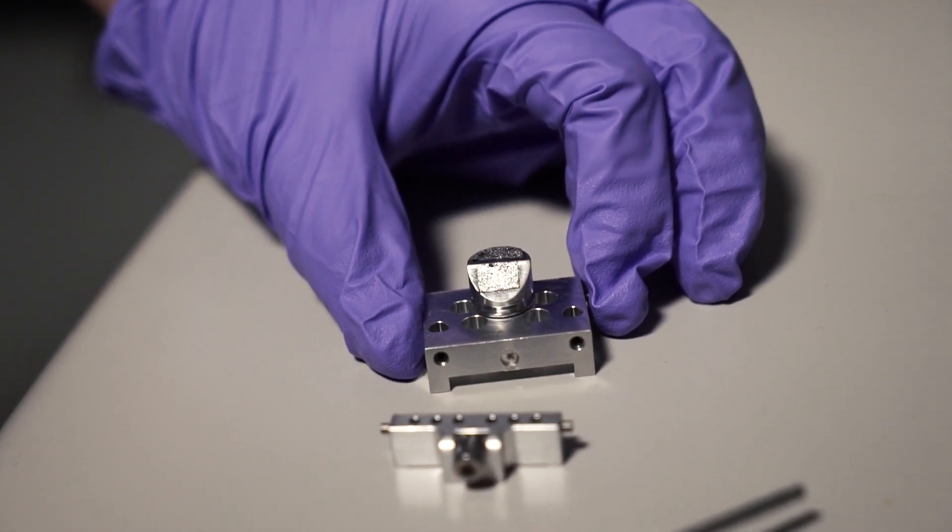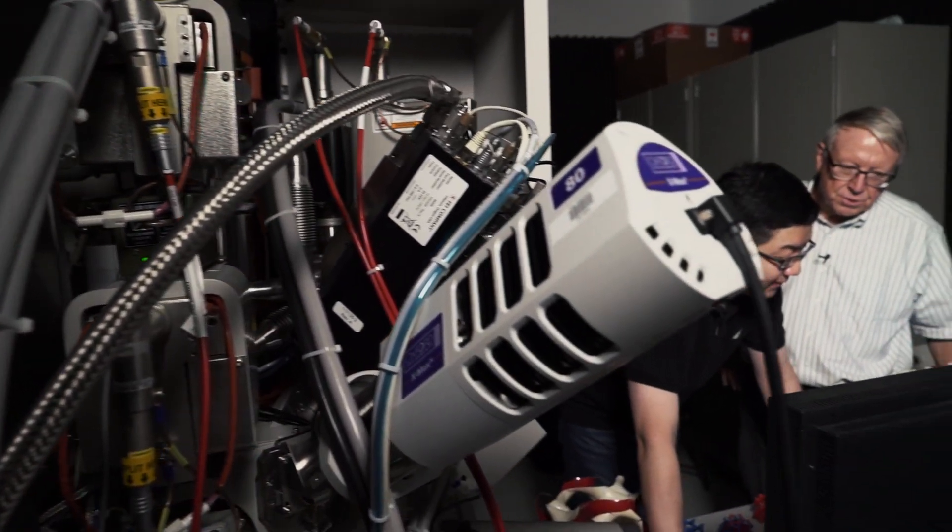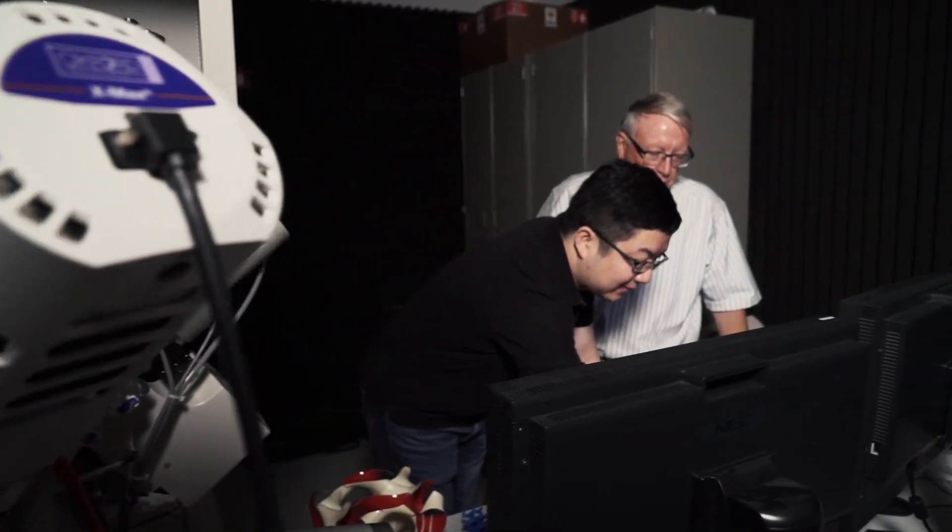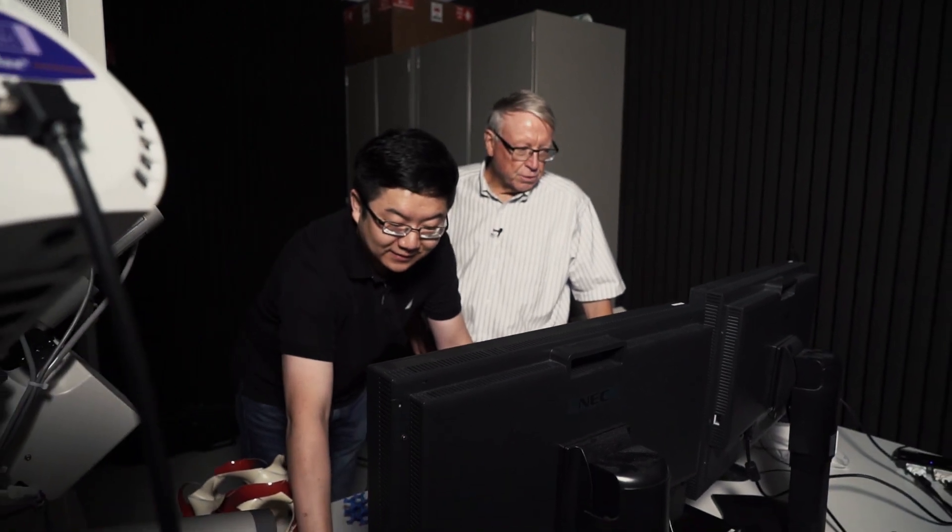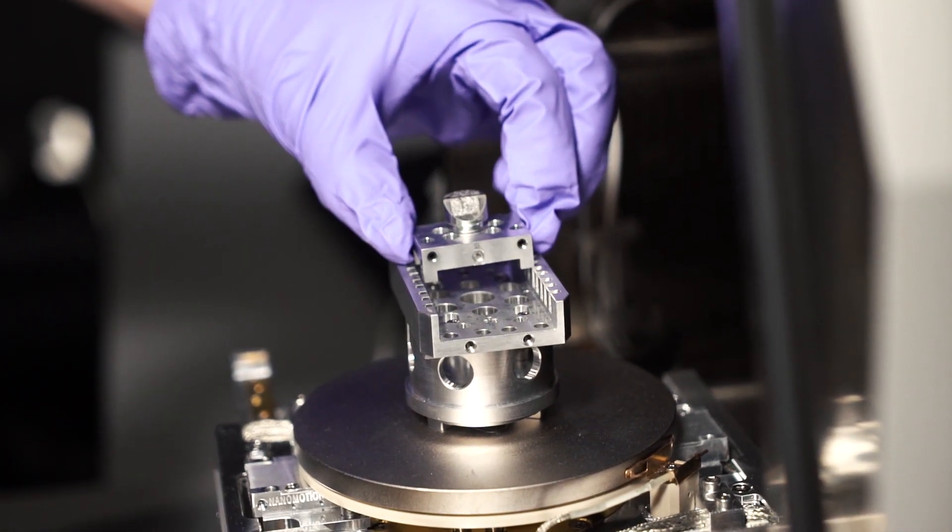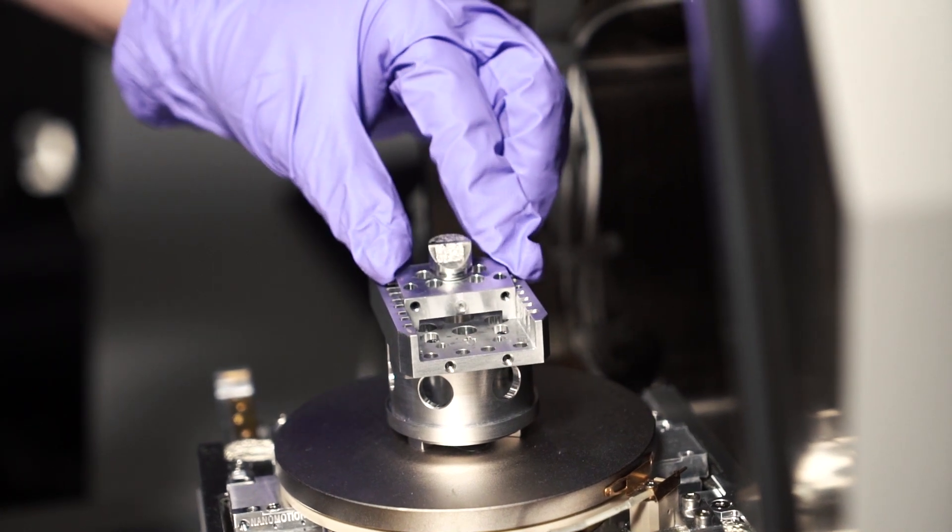They were triclinic, which is much lower symmetry than what we expected. It turns out that probably everyone that's been experimentally studying the gyroid has been studying something which is non-cubic.